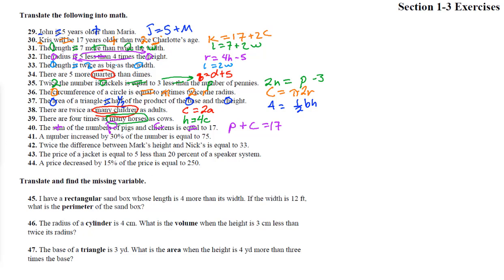Number 41: a number N increased by 30% of the number — 0.3 times the number N — is equal to 75. So N plus 0.3N equals 75. 'Increased by' is a plus sign: N + 0.3N = 75.